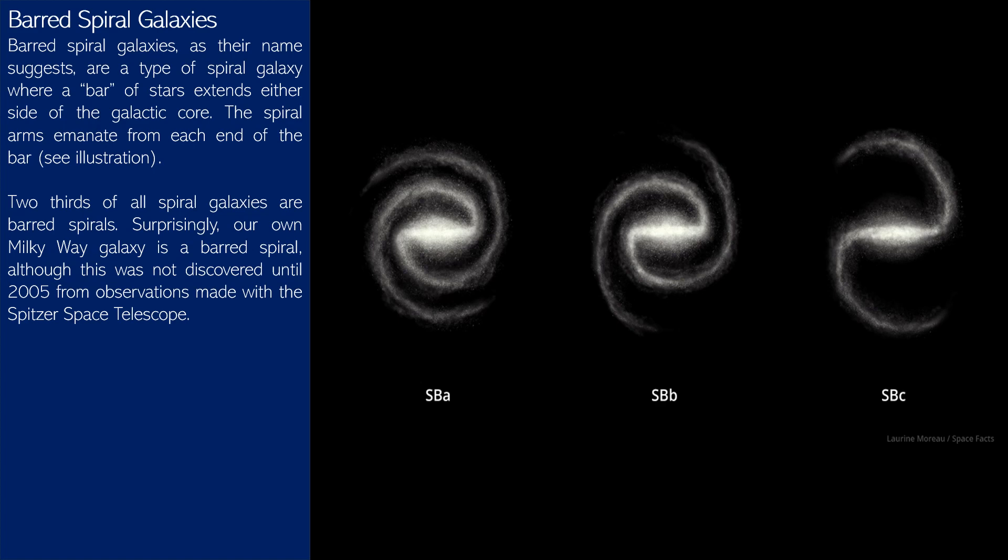Surprisingly, our own Milky Way galaxy is a barred spiral, although this was not discovered until 2005 from observations made with the Spitzer Space Telescope.